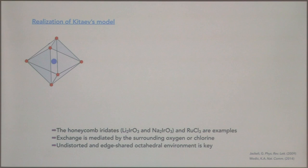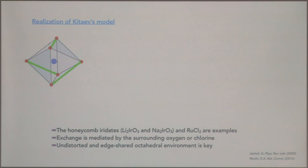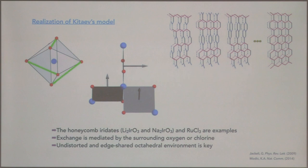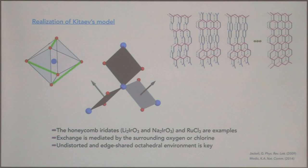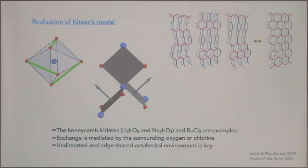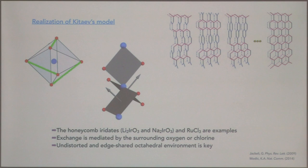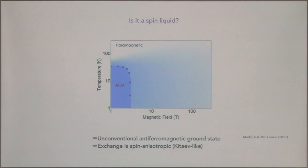Those exchange plaquettes are all orthogonal to each other. For example, when you look at the octahedra, if the exchange is mediated through the top two atoms of that edge-shared face, there are two possibilities for which you can choose that the other exchange plaquettes lie on — they could be connected through those two edges or the other two edges. It's a cute property of undistorted octahedra that allows you to have basically the same physics in both two-dimensional and three-dimensional structures. In either case, you still end up with mutually orthogonal exchange interactions on the three nearest neighbor bonds.